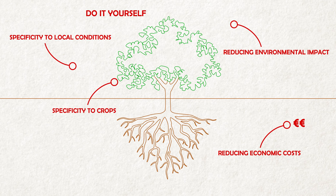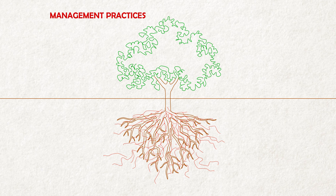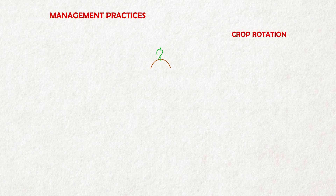Other than inoculation, there is a second strategy to enhance mycorrhizal symbiosis in agricultural soils: agro-system management. In other words, the adoption of field practices which increase the colonization by indigenous populations. For that purpose, we need to bear in mind that many agricultural practices affect fungal growth and root colonization, sometimes proving detrimental to them. For example, crop rotation.